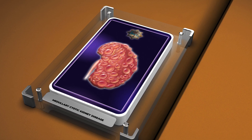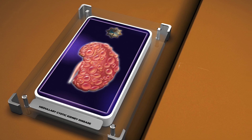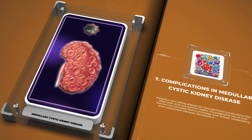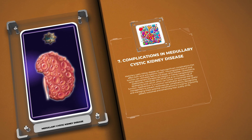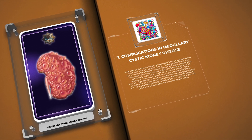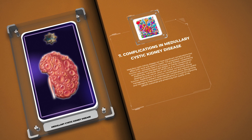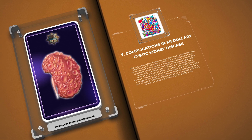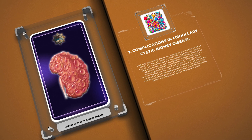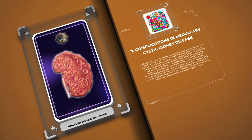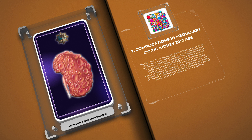Medullary cystic kidney disease can have significant complications affecting both renal and systemic health. The progressive loss of renal function can ultimately lead to end-stage renal disease, necessitating renal replacement therapies like dialysis or kidney transplantation. Additionally, individuals with MCKD are at increased risk of developing renal calculi, which can further compromise kidney function. Hypertension is a common complication requiring careful management to prevent cardiovascular complications.